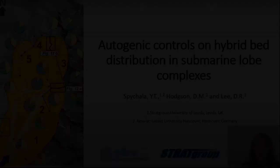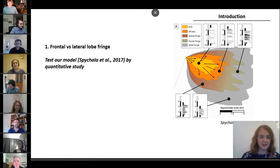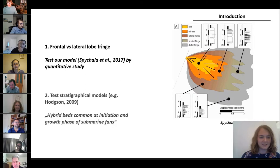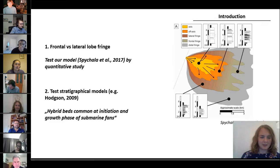Within the next couple of minutes, we will look at two aspects. First of all, we will look at the geographical distribution of hybrid beds — meaning if frontal lobe fringes are really enriched in hybrid beds compared to lateral lobe fringes. And secondly, we will look at the hypothesis that hybrid beds are more common at the initiation and growth phase of submarine fans.